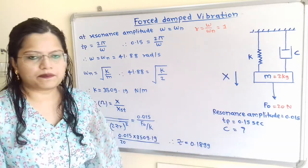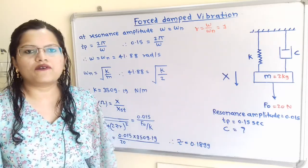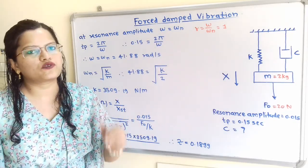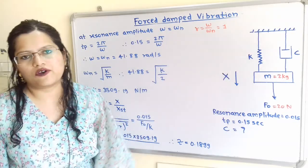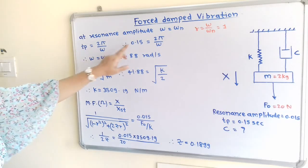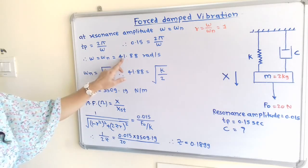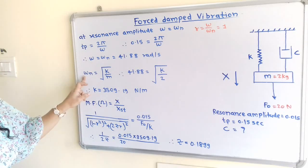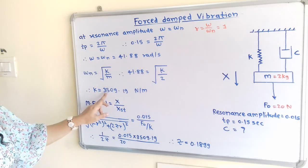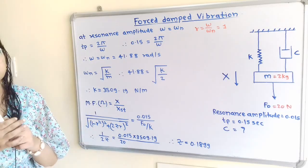We have time period T_P = 2π/ω. So we will first find out the value of ω, where ω = ω_N = √(K/M). Putting T_P = 0.15: ω = ω_N = 41.88 radians per second. Therefore K = 3509.19 Newton per meter. This is the value of spring stiffness K.